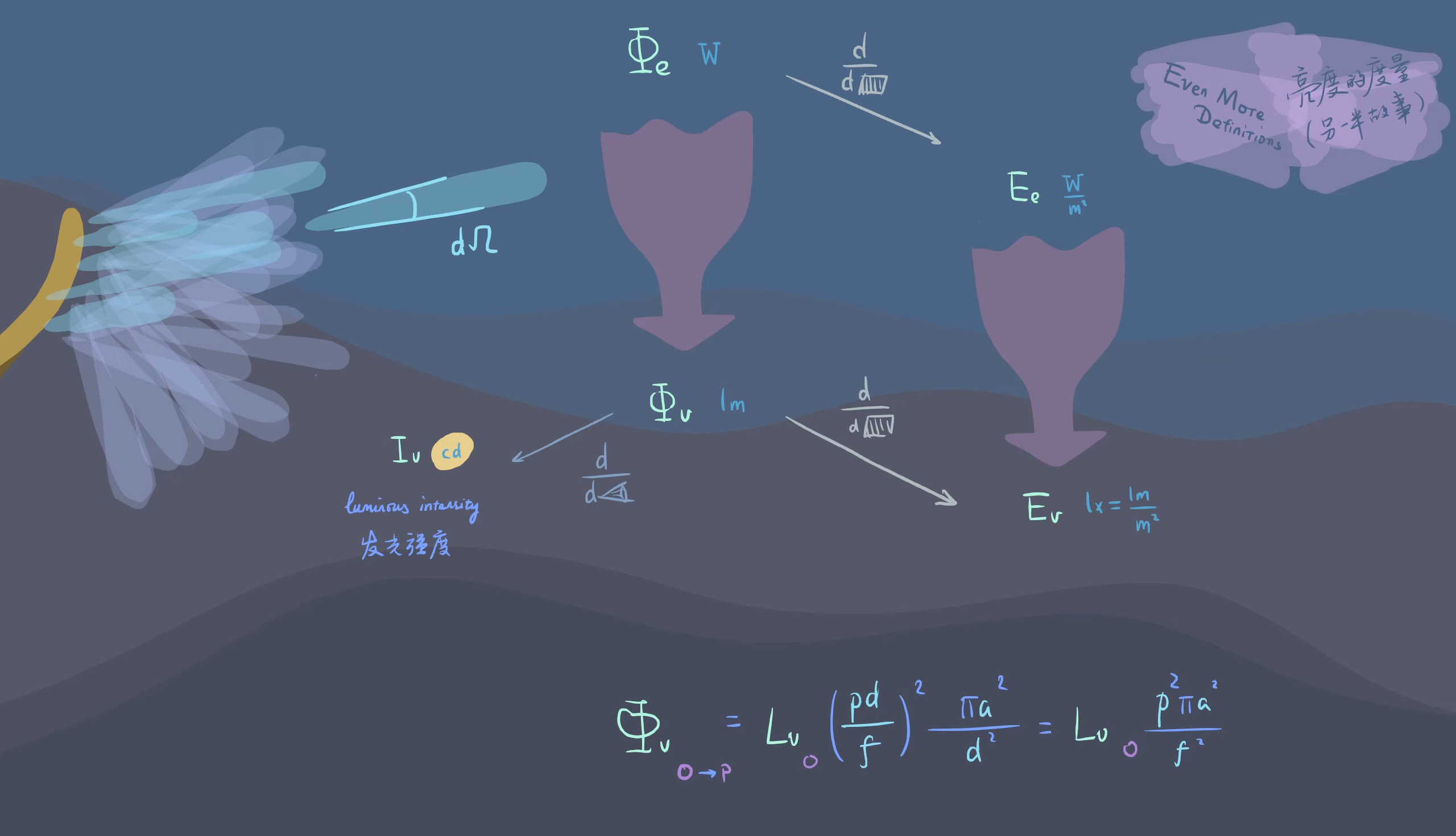The luminous flux per solid angle is called luminous intensity with unit candela. It happens to be an SI basic unit. Weird. The luminous flux from a unit area is the luminance, which we're already familiar with. The luminous intensity per area of emission is called luminance, only two letters away from illuminance we used earlier. That's LV. It has the unit of nit. Nit may sound familiar because it describes the brightness of your monitor.